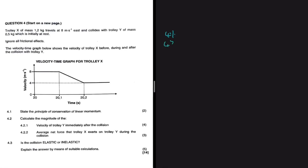For 4.2.1, we are looking for the velocity of trolley Y immediately after the collision. To determine this, we are going to use the principle of conservation of linear momentum, because we know that the sum of the momentum before a collision should be equal to the sum of the momentum after the collision.